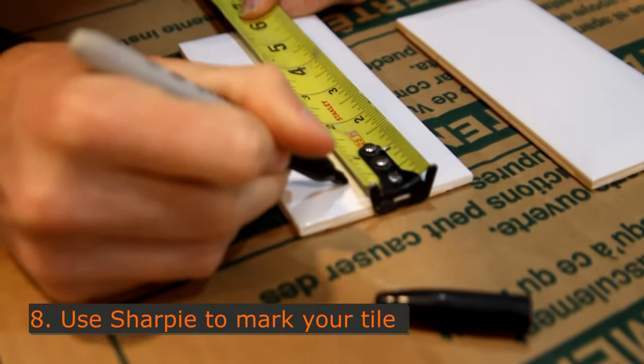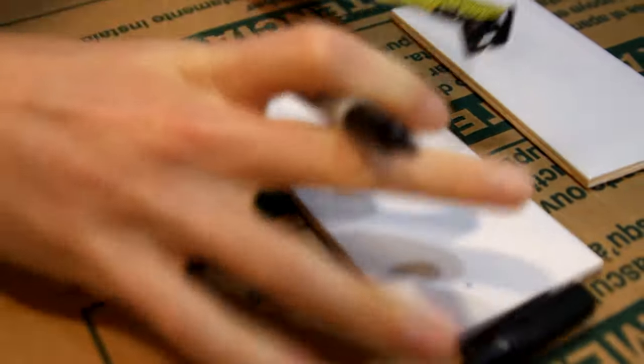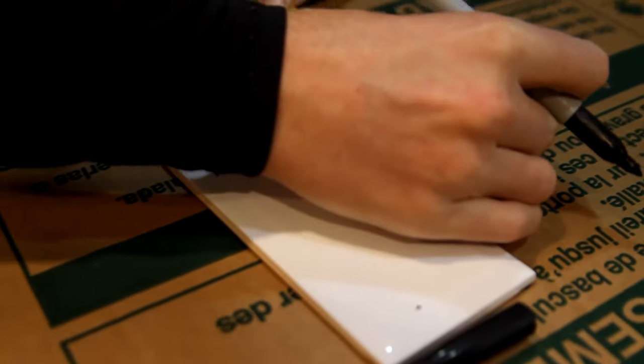Use a Sharpie to mark the top of your tile. They're easy to write with, easy to see, and then you can just wipe it right off that surface when you're done.